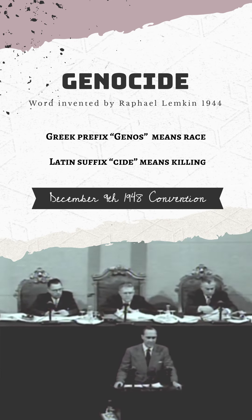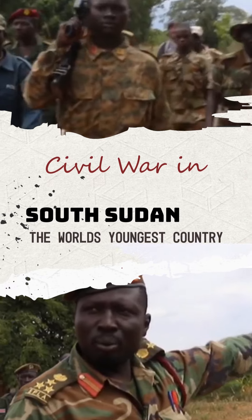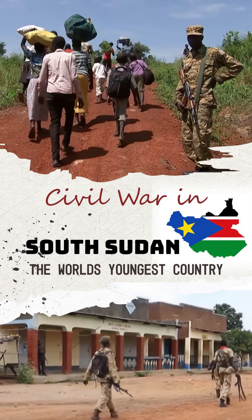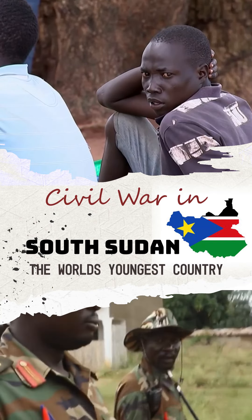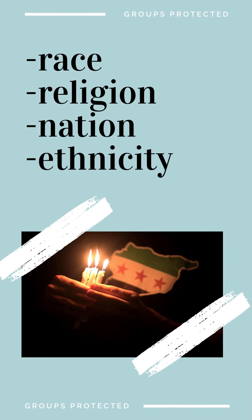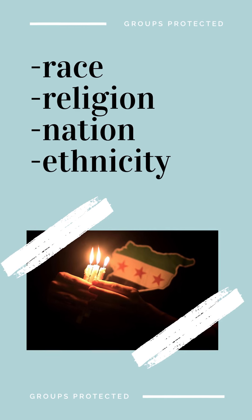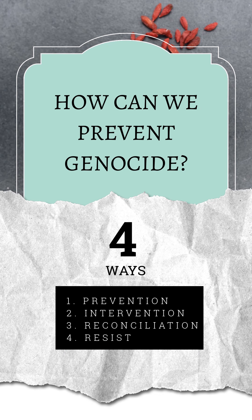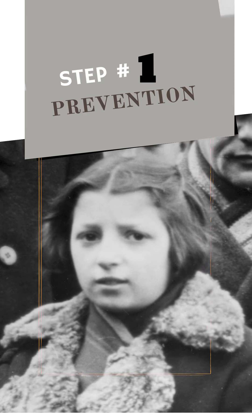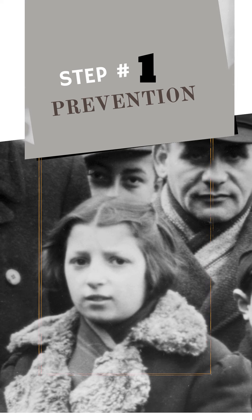Genocide is a crime under international law. Genocide differs from hot war or civil war in the sense that it often targets unarmed groups of people with the goal of exterminating. Moreover, what distinguishes genocide from crimes against humanity is that crimes against humanity refer to all civilian populations, whereas genocide protects specific groups of people. So this begs the question: how can we prevent genocide? The legal definition of genocide requires genocidal crimes to be accompanied with a specific intent to destroy a group.